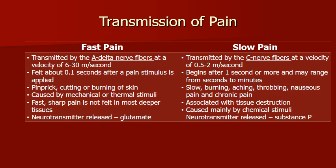Fast pain is transmitted via A-delta nerve fibers and is felt at about 0.1 seconds after a pain stimulus is applied. A-delta fibers detect pinprick, cutting, or burning of skin caused by mechanical or thermal stimuli. This fast, sharp pain is not felt in most deeper tissues. The neurotransmitter released is glutamate. The slow pain response, transmitted via C fibers, begins after one second or more and may range from seconds to minutes. C fibers detect slow, burning, aching, throbbing, nauseous, and chronic pain. This is associated with tissue destruction and is caused mainly by chemical stimuli such as substance P.